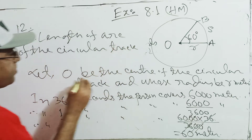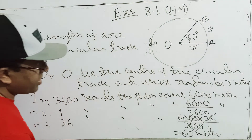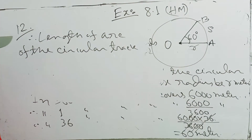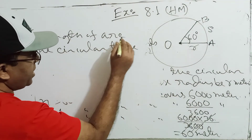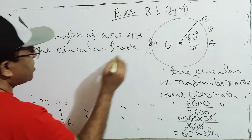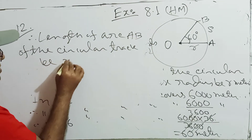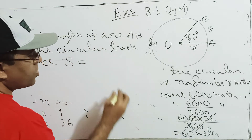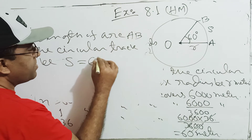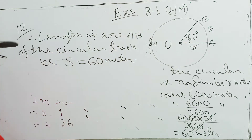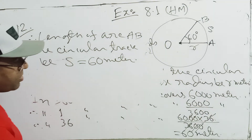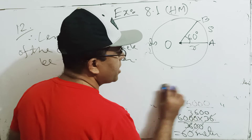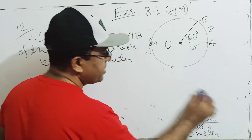The length of arc AB of the circular track, which equals the distance covered, is 60 meters. The central angle is 60 degrees, which we need to convert to radians.